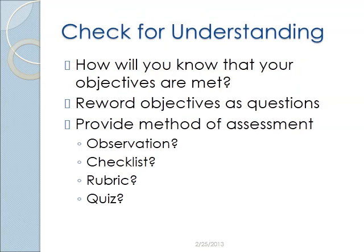The next section is the check for understanding. Basically you're going to think about how you'll know whether your objectives are met or not — did the children really learn? This is actually an easy section, but a lot of people get confused. Basically go back to your objectives and just reword them as questions. If you said the children will be able to learn the letter M, then here for check for understanding you're going to say 'I'm going to observe to see if they learned the letter M.' So you just take your objectives and reword them as questions.